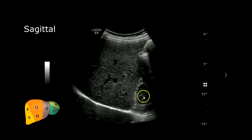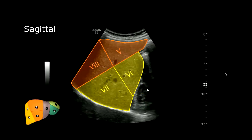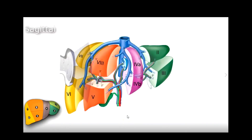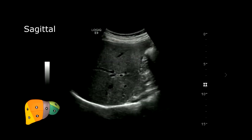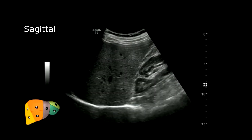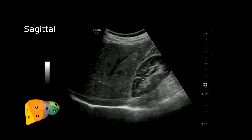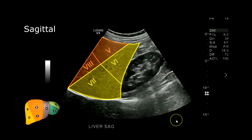Moving further laterally, you start to see a little bit of kidney, with segments 5, 8, 6, and 7 visible. All the way laterally you have the kidney and segments 5, 6, 7, and 8.